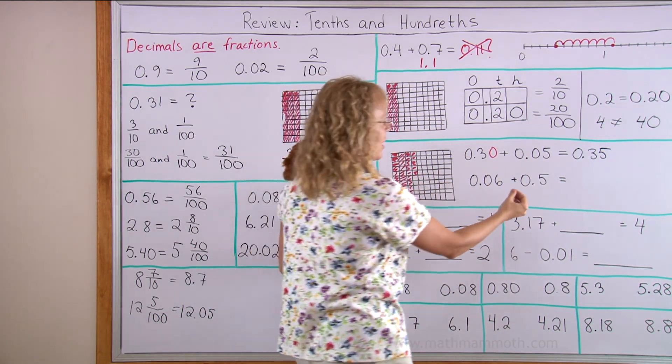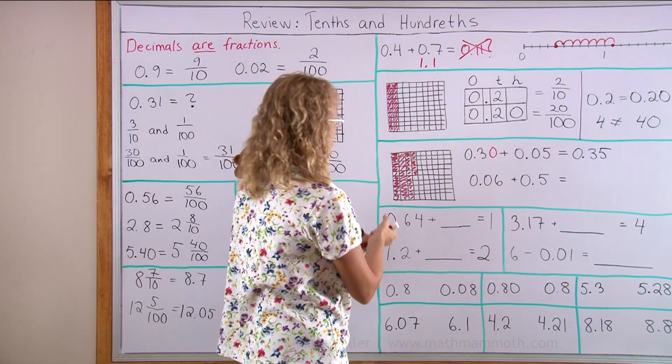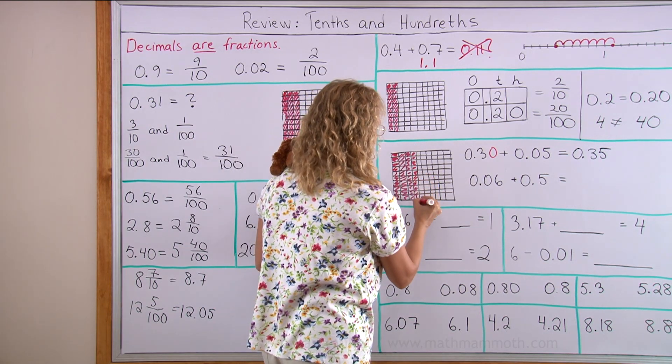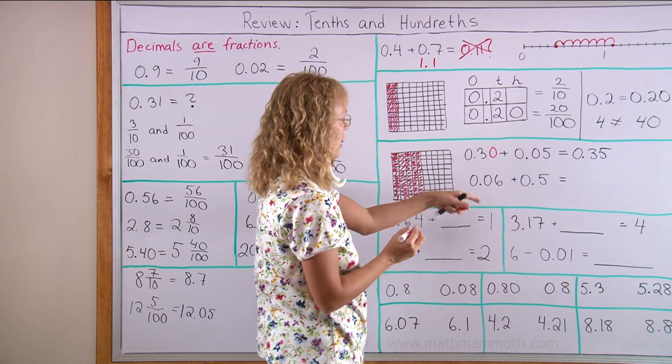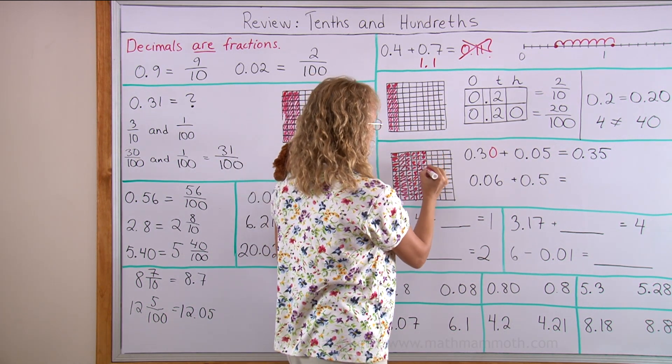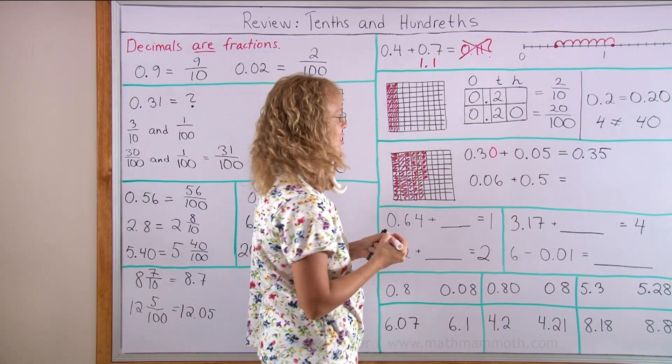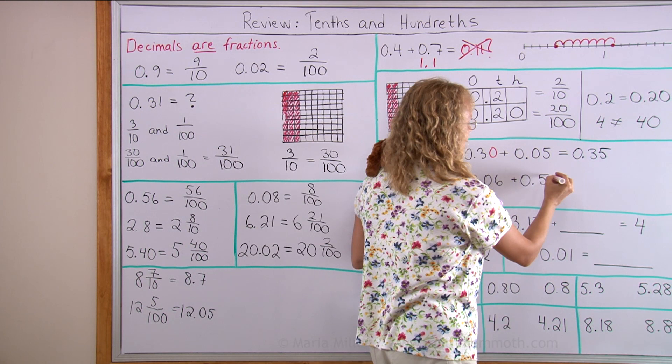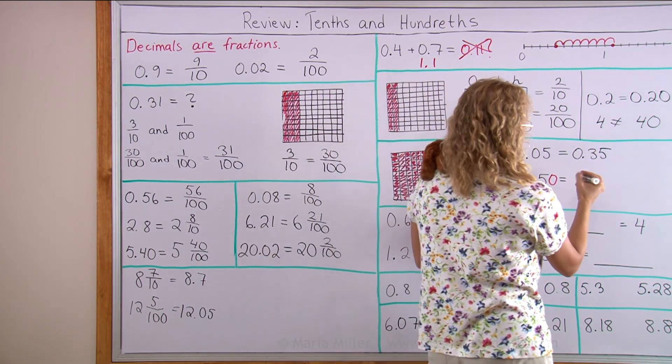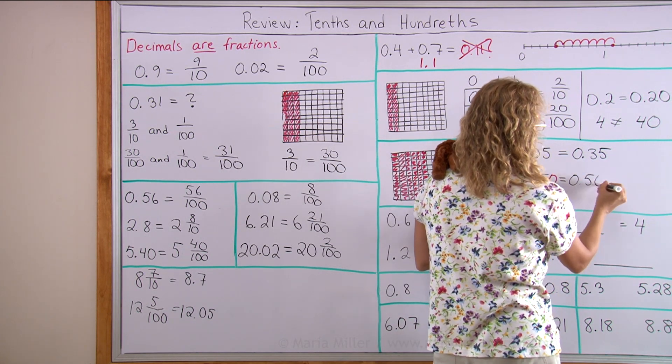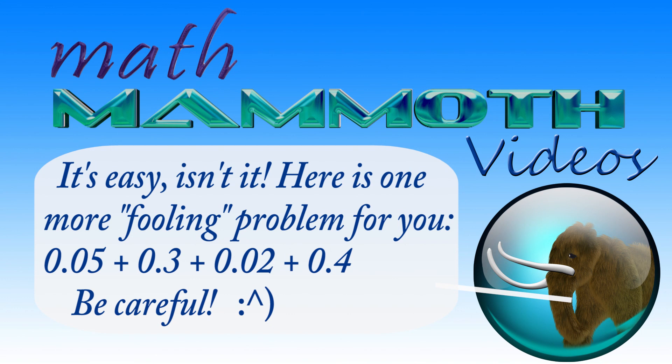Here, same thing. Let's say I have 6 hundredths and 5 tenths. I can first color in 5 tenths. 5 tenths would mean 5 whole columns here. Then I add or color 6 little squares here, 6 hundredths. So I have 56 hundredths. And I can also use my trick by tagging a 0 here, making it 50 hundredths. And so it's easy to see the answer is 56 hundredths. Thanks so much.